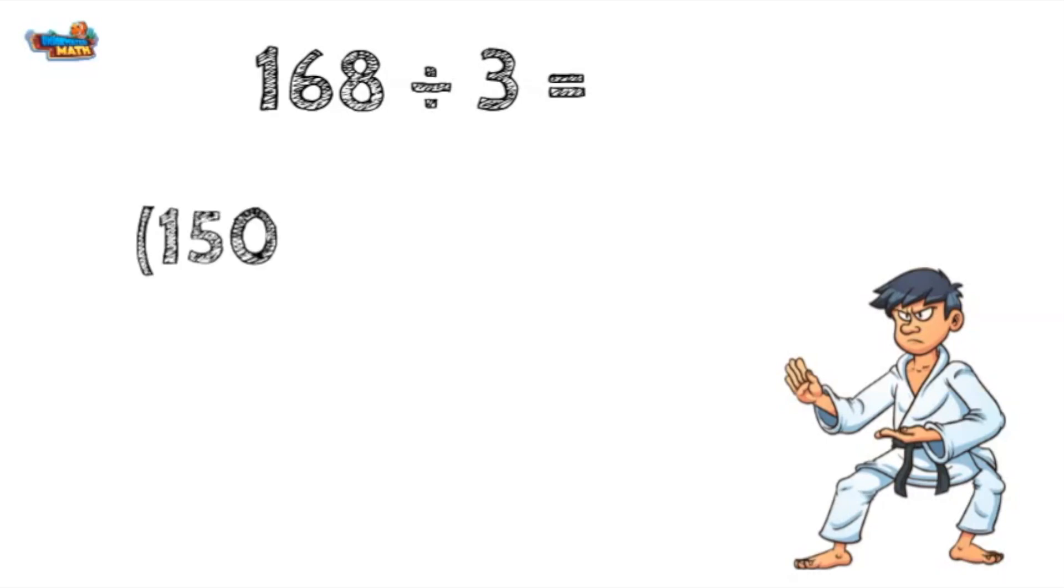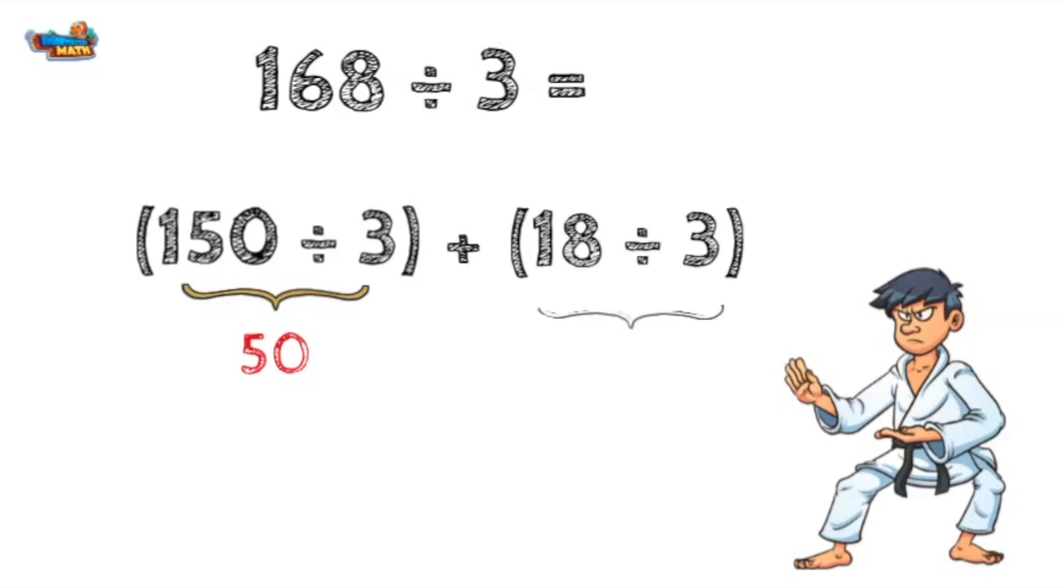For example, 150 can be divided by 3 to get 50. If I take 150 away from 168, I am left with 18. 18 divided by 3 equals 6. I add the two quotients together to get a total of 56.